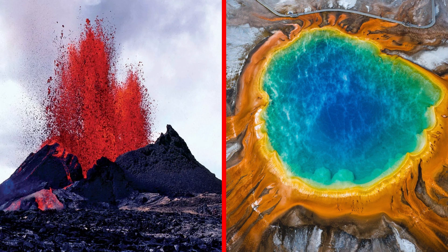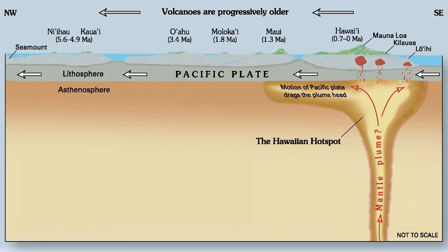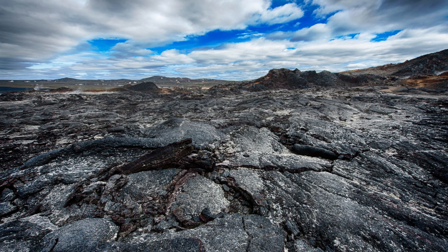What is the difference? The Yellowstone hotspot is beneath thick continental crust, while the Hawaii hotspot is beneath thin oceanic crust. We have more to discuss regarding igneous rocks, so let's move forward and learn more about them now.